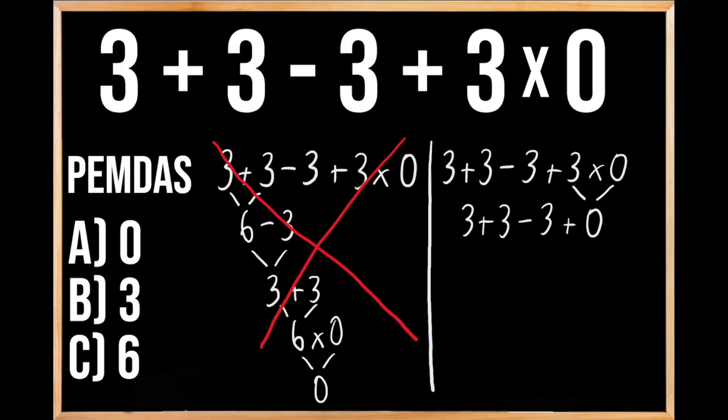So we have 3 plus 3 minus 3 plus 0. Since we don't have any multiplication or division to deal with, we're going to move on to our last priority of adding or subtracting. Since adding and subtracting are the same priority, we solve from left to right. We're going to add 3 plus 3, which gives us 6.